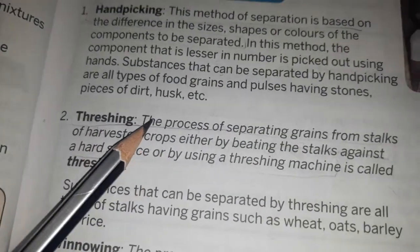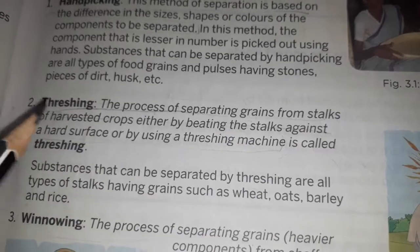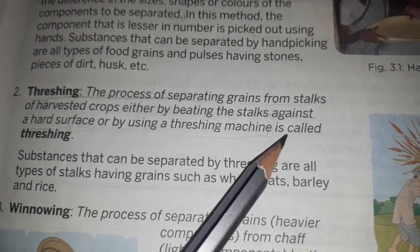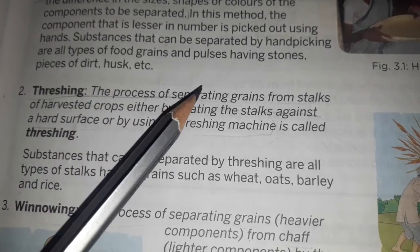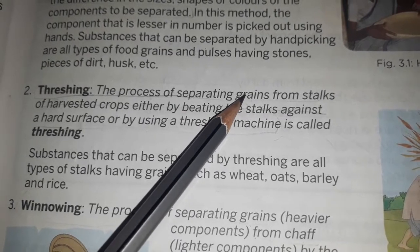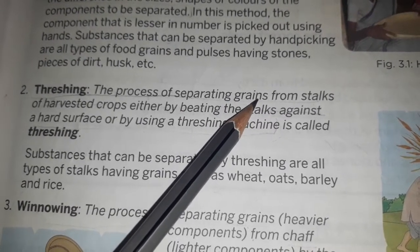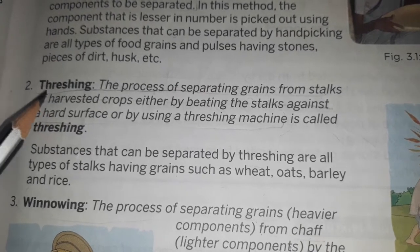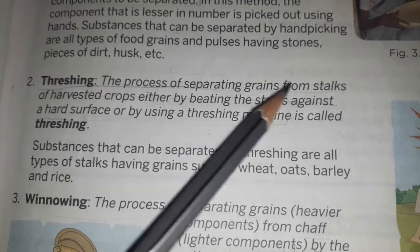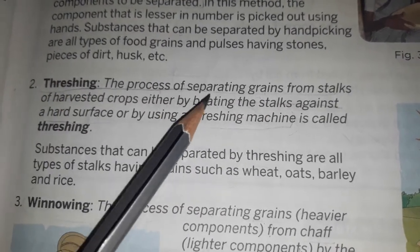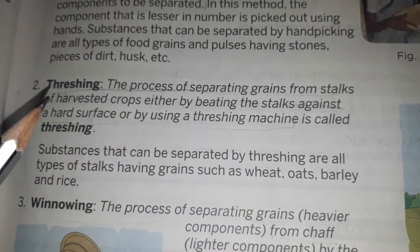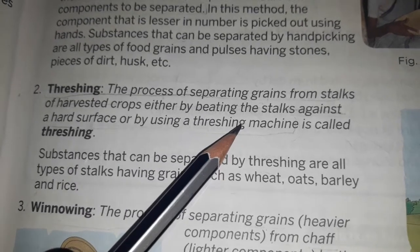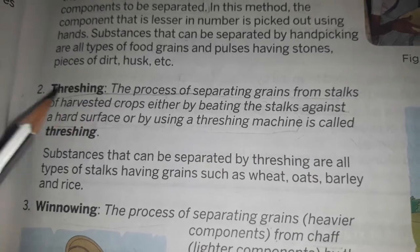The second method is Threshing. The process of separating grains from stalks of harvested crops, either by beating the stalks against a hard surface or by using a threshing machine, is called Threshing. When the crops are harvested and cut, the grains are separated from stalks by beating them on a hard surface. In modern technology, a threshing machine can also be used.